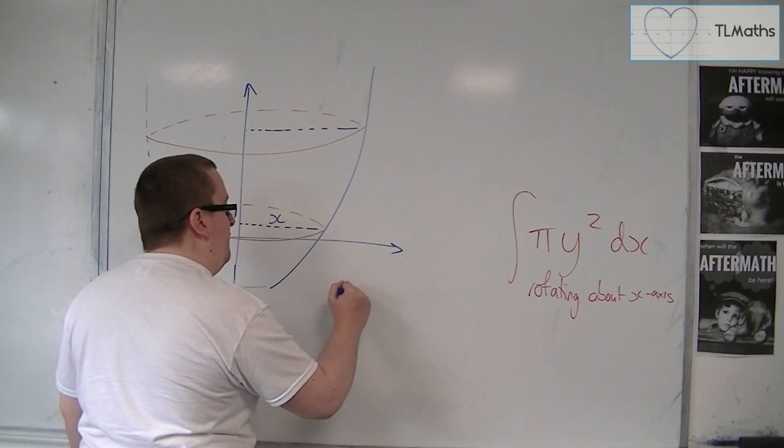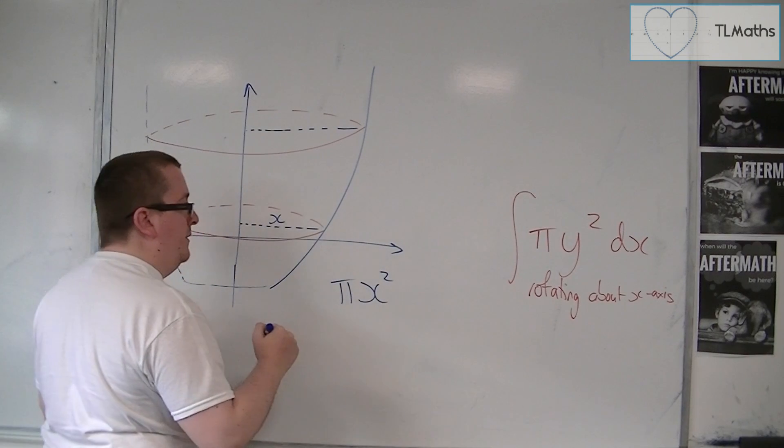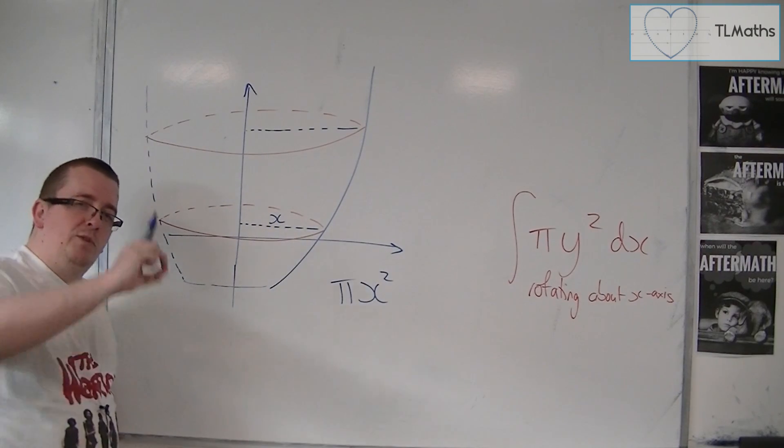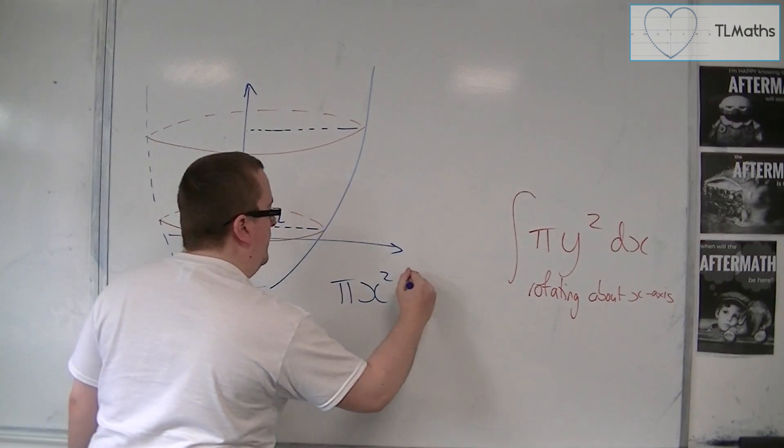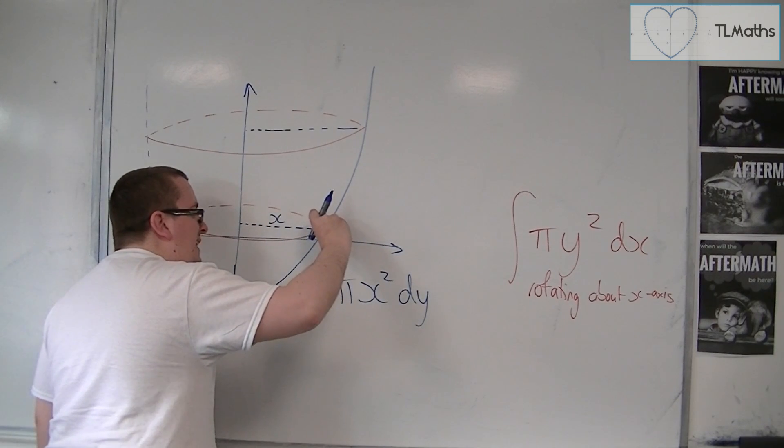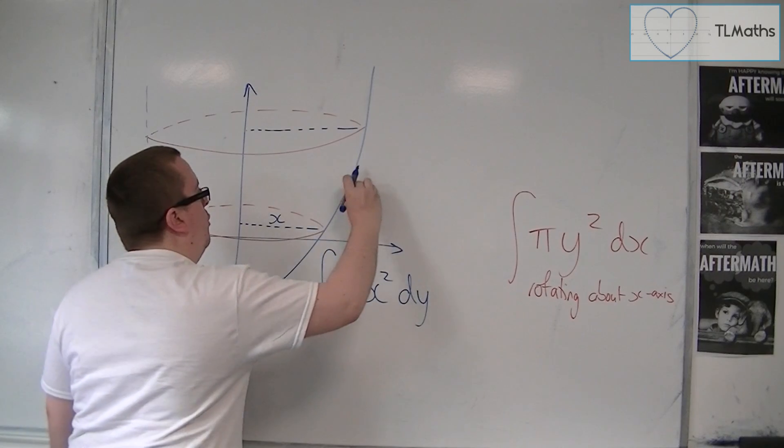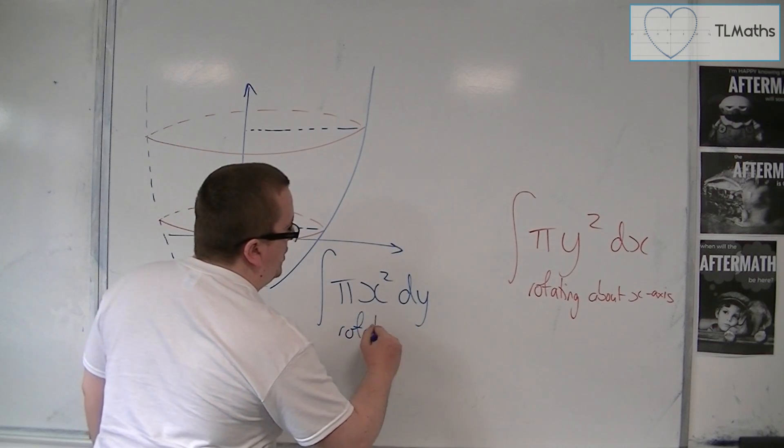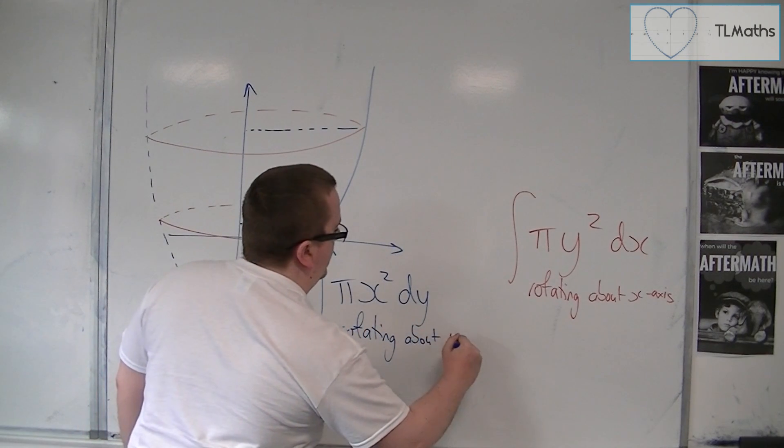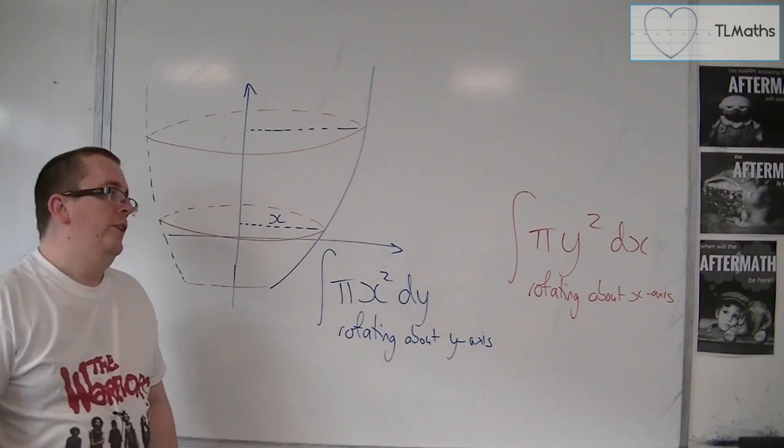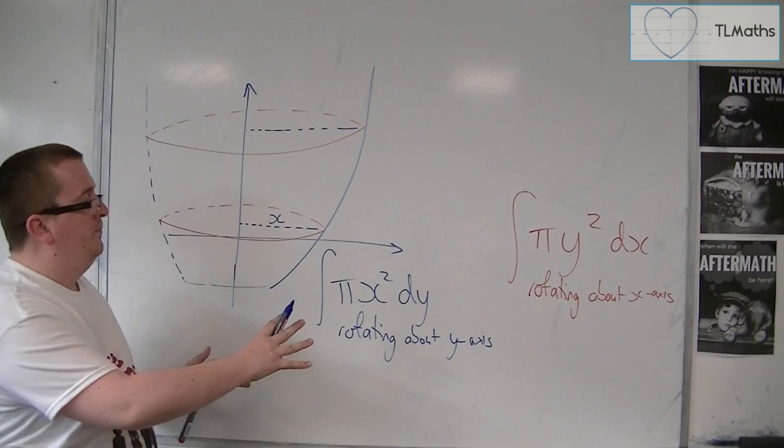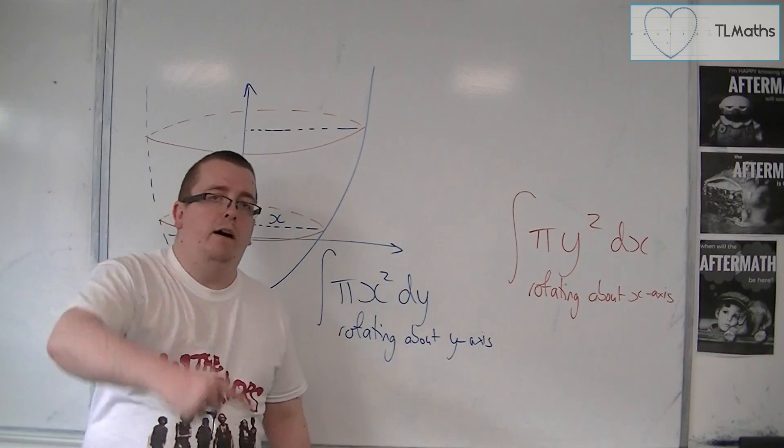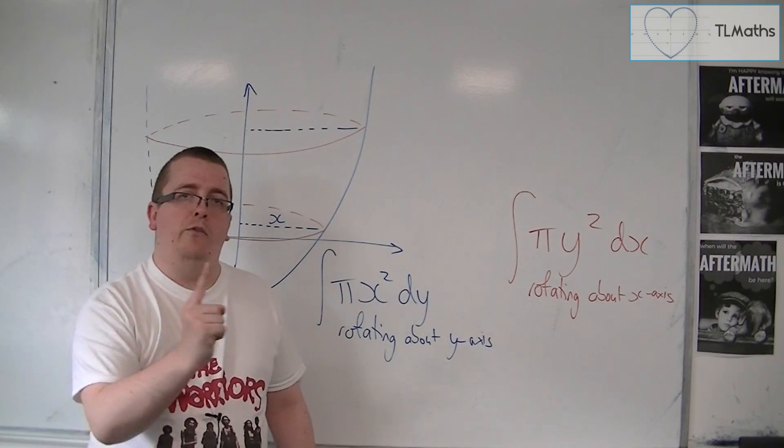We would actually have pi r squared, which is pi x squared, and you're multiplying it by the width of each of these strips, which is an infinitesimally thin amount, but it's in the y direction. We could call that dy, and we're going to add all of those together, and that is the formula we need to rotate about the y-axis. We've got two very similar formulas, and these will allow us to find the volumes rotating 360 degrees, either about the x-axis or about the y-axis.